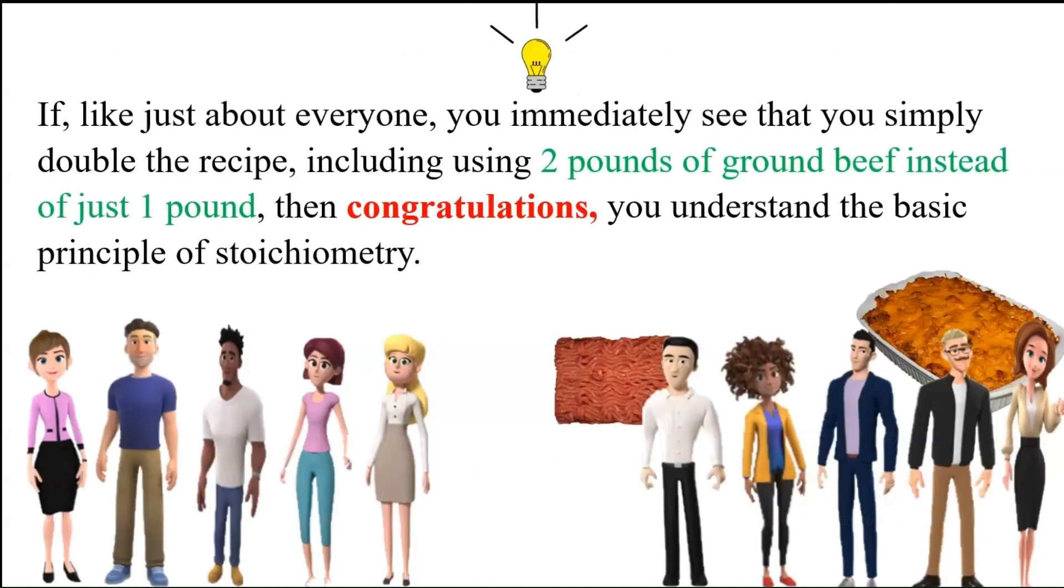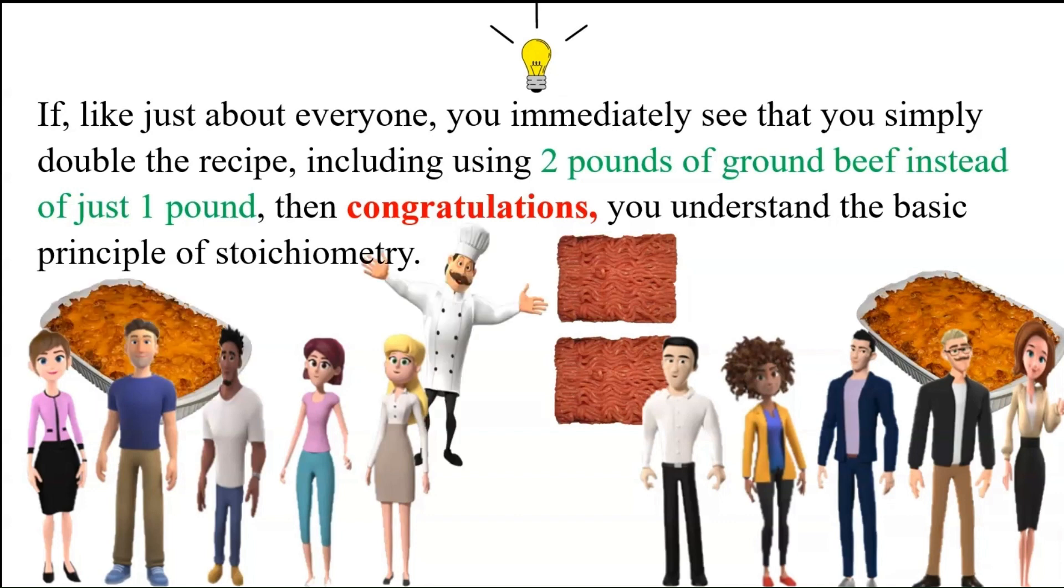But, like most people, if you immediately see that you just simply double the recipe, which includes using two pounds of ground beef instead of just one pound, then congratulations, you understand the basic principle of stoichiometry. Sometimes you need not exactly the same amount as what is called for in the recipe, and you don't really have to be a master cook to figure that out.